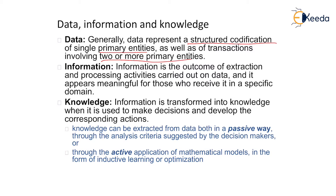Second is information. Information is the outcome of an extraction and processing activity carried out on data. Whatever data you have, if you read that data, if you process or analyze that data, after analyzing the data, whatever you extract — after processing that data, whatever output you get — that is called as information, and it appears meaningful for those who receive it in a specific domain.